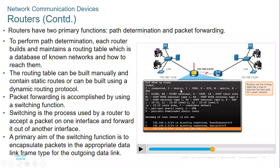'S' stands for static route, meaning the route was learned statically or configured manually by a network admin. This is practical when the network is very small. When the network is very large, you use dynamic routing protocols. 'D' is for a dynamic routing protocol called EIGRP; 'EX' is EIGRP external; 'O' is OSPF.